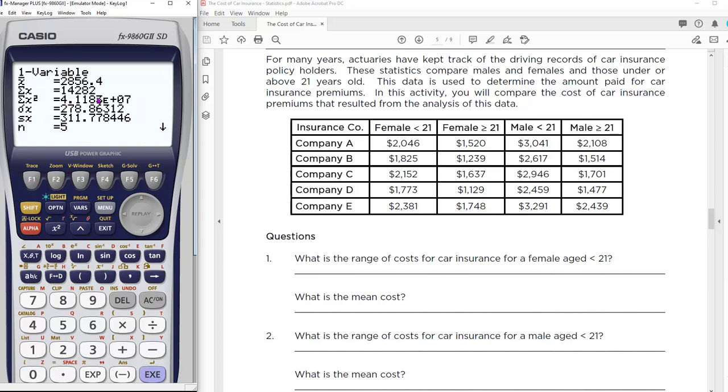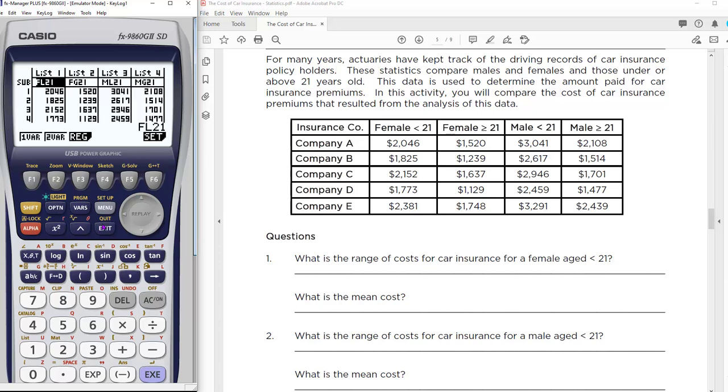exit to get back. Now I'm hitting one variable, and this is coming from list three because that's what I just changed it to. Notice the mean is much higher than for females under 21. Males have a higher mean than females under 21. Let's exit again.